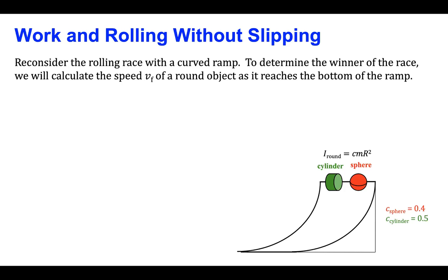The cylinder and the sphere will start at the top of the ramp at rest, and we want to find which one gets to the bottom first by calculating which one has the fastest speed at the bottom. We'll begin by drawing a y-axis vertically up and an x-axis to the left to describe the motion of the round objects as they move down the curved ramp. The initial position will be y sub i and the final position will be y sub f along the vertical axis.